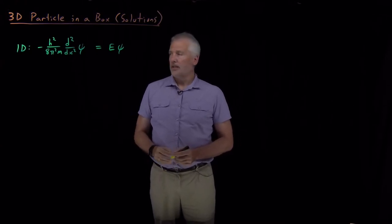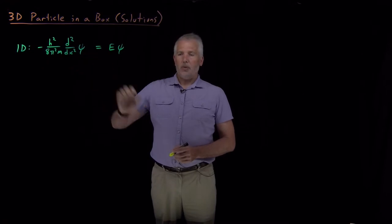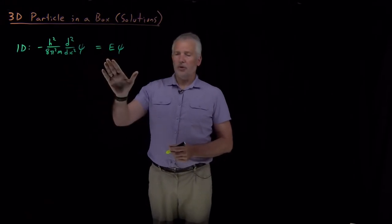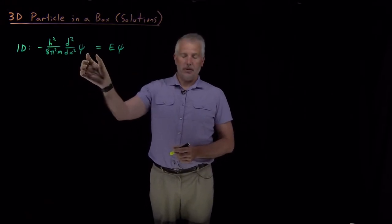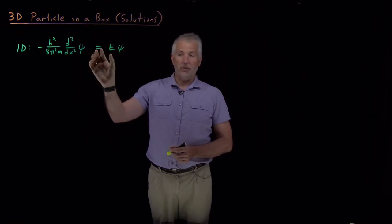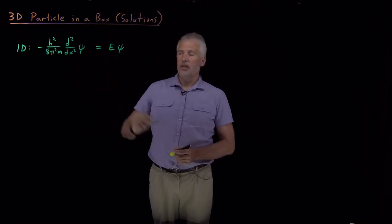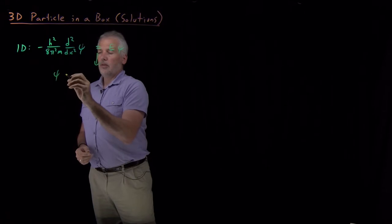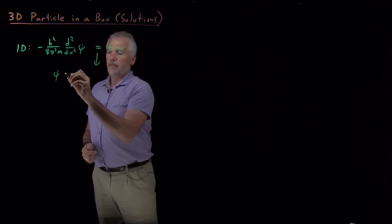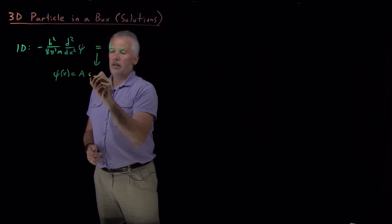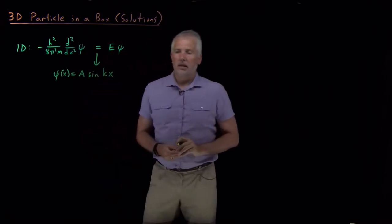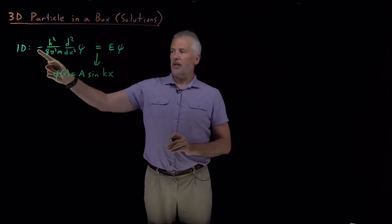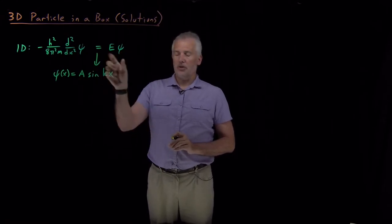As a reminder of how we proceeded for the one-dimensional particle in a box — since the 3D case will be very similar — we wrote down Schrödinger's equation with a kinetic energy term. The potential energy term was zero because we assume the particle has no potential energy inside the box. Anything that looks like a sine wave will have a second derivative that's the negative of the original function, so those are all solutions to this Schrödinger's equation.